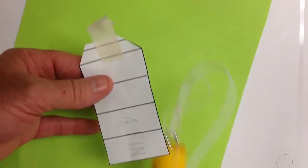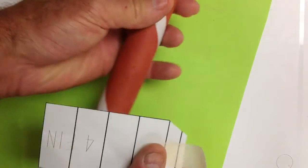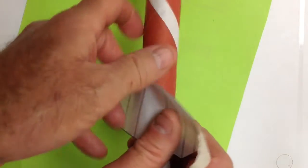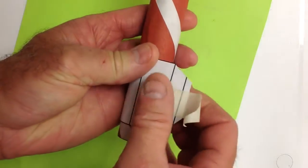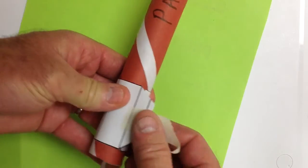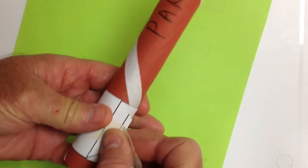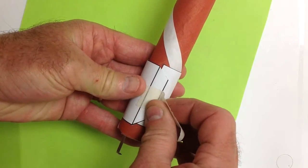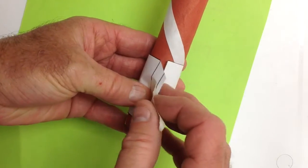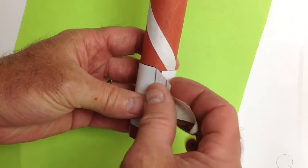Take your rocket, and you want to put the alignment template down pretty close to the end, like that. Make sure that the lines with the tab and the lines below here line up.